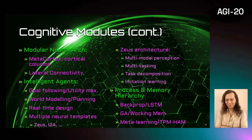Zeus is ongoing research and its design goals are multimodal perception, multitasking, task decomposition, and imitation learning for near human-level exploration and manual labor automation tasks. Zeus has a deep learning architecture using components from Omega like Metacortex and neural architectures.